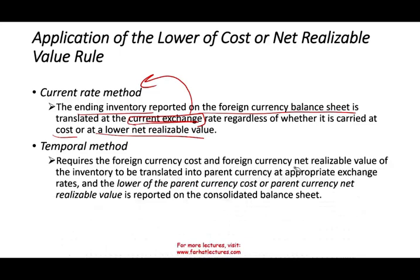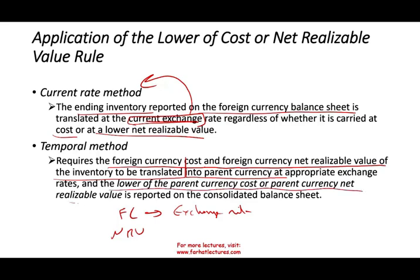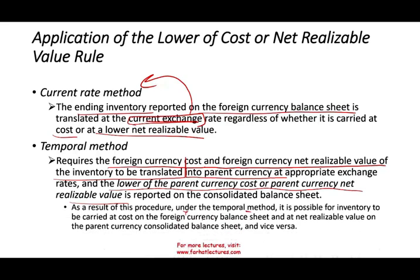For the temporal method, it's a little more involved. We require both the foreign currency cost and the foreign currency net realizable value of inventory to be translated into the parent company currency at the appropriate exchange rate. We then apply the lower of parent currency cost or parent currency net realizable value. As a result of this procedure, it's possible for inventory to be carried at cost on the foreign currency balance sheet but at net realizable value on the parent currency consolidated financial statements, or vice versa.